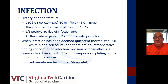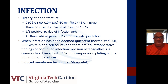Once there are no intraoperative findings of continued infection, revision ORIF works well. Using 3.5 millimeter compression plating technique with a minimum of six cortices. In combination, we tend to use the induced membrane technique — the Masquelet technique — which tends to work well in forearm fractures that have become infected.